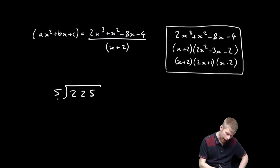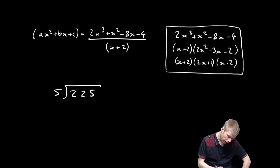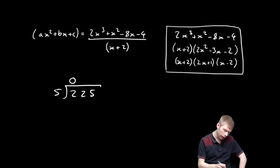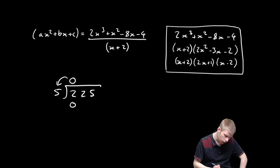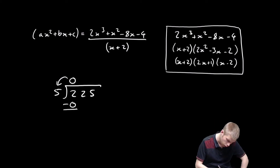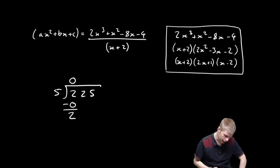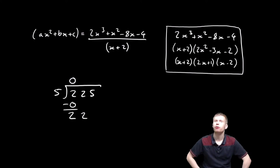First, how many times does 5 go into 2? It doesn't — 2 is smaller than 5 so it doesn't go in. I find the remainder by doing 0 multiplied by 5, which is 0. Then 2 minus 0 is 2. And then the 2 comes down to join in.